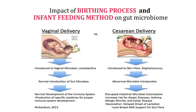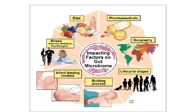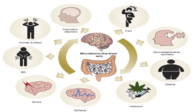This abnormal microbial introduction may lead to disrupted intestinal microbial colonization, which may increase the risk of atopic dermatitis, asthma, allergic rhinitis, celiac disease, etc. In the same way, formula feeding and delayed onset of breastfeeding also leads to abnormal introduction to microbiota. Stress is another factor — which we have already seen how it affects the gut-brain axis.